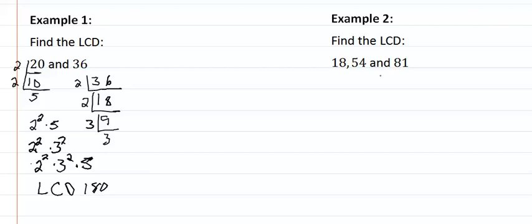Let's look at the LCD for each one of these. Well, 18 is divisible by 2, that leaves us with 9. 9 is divisible by 3, that leaves us with 3. So we got 2 times 3 squared.